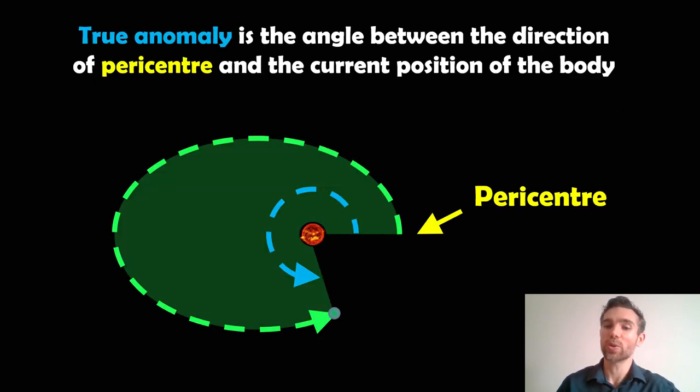So what is the true anomaly then? Well, the true anomaly is the angle between the direction of the pericentre and the current position of the body that's orbiting the large one. So here I've got an example of a star and a planet, and it would be the angular position of the planet around the star from the pericentre. So it would be that blue angle there, how far it's gone around since the pericentre.